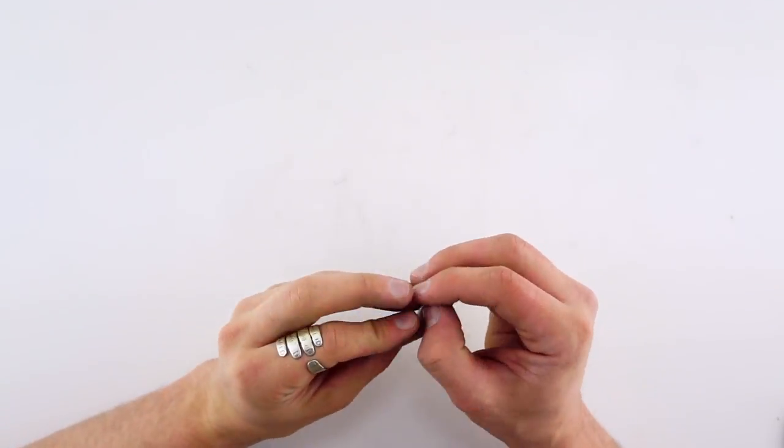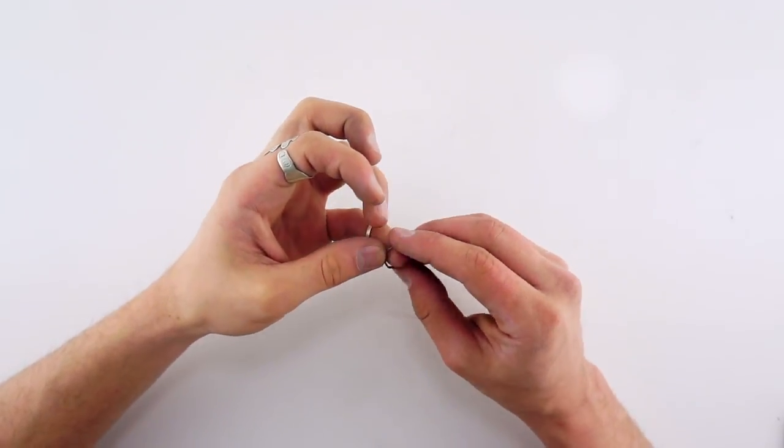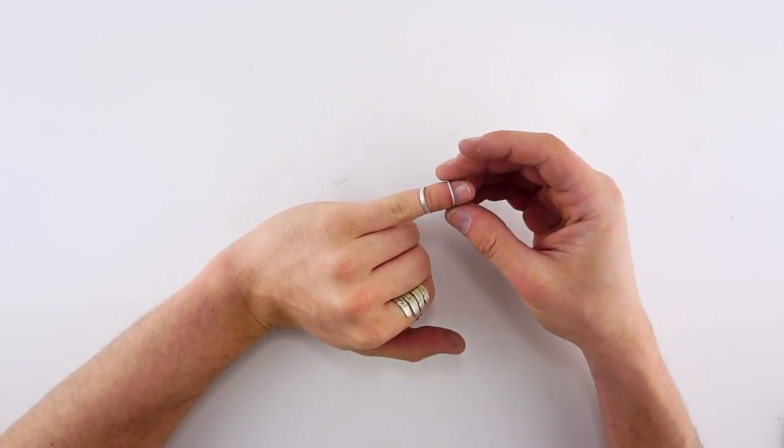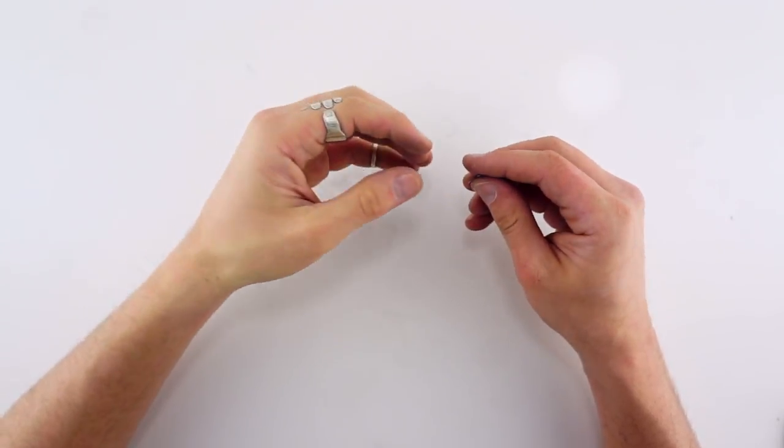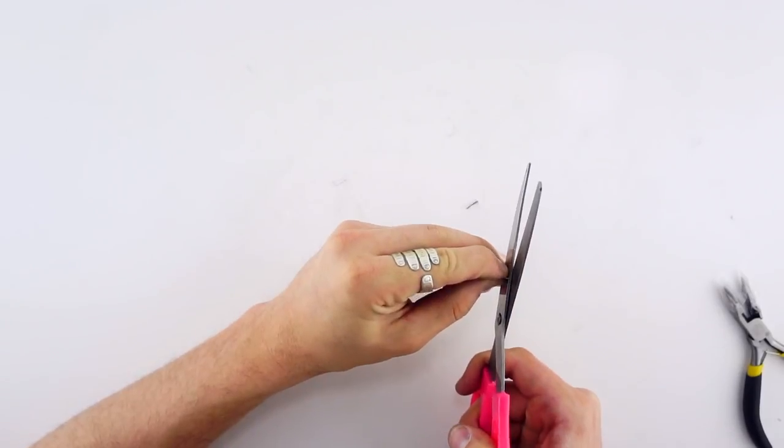So go ahead and bend that into a circle. And make sure it fits the finger that you want it to fit. I'm just making this a little small one, a little midi for Romney. And then you're going to cut off all the excess.